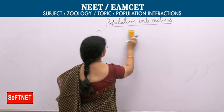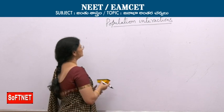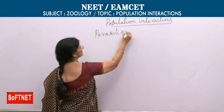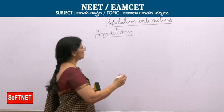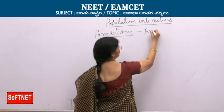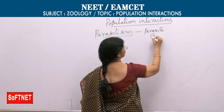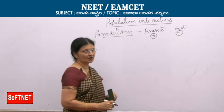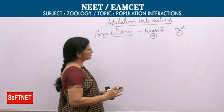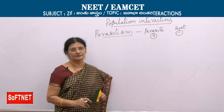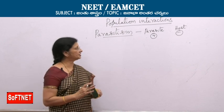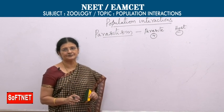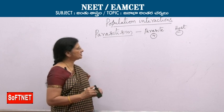Now let us look at another type of association: parasitism. In parasitism, the organism that benefits is the parasite, and the organism that is harmed is the host. Ideal or successful parasites do not kill the host, because they recognize that if the host dies, the parasite's own life cycle will also come to an end.